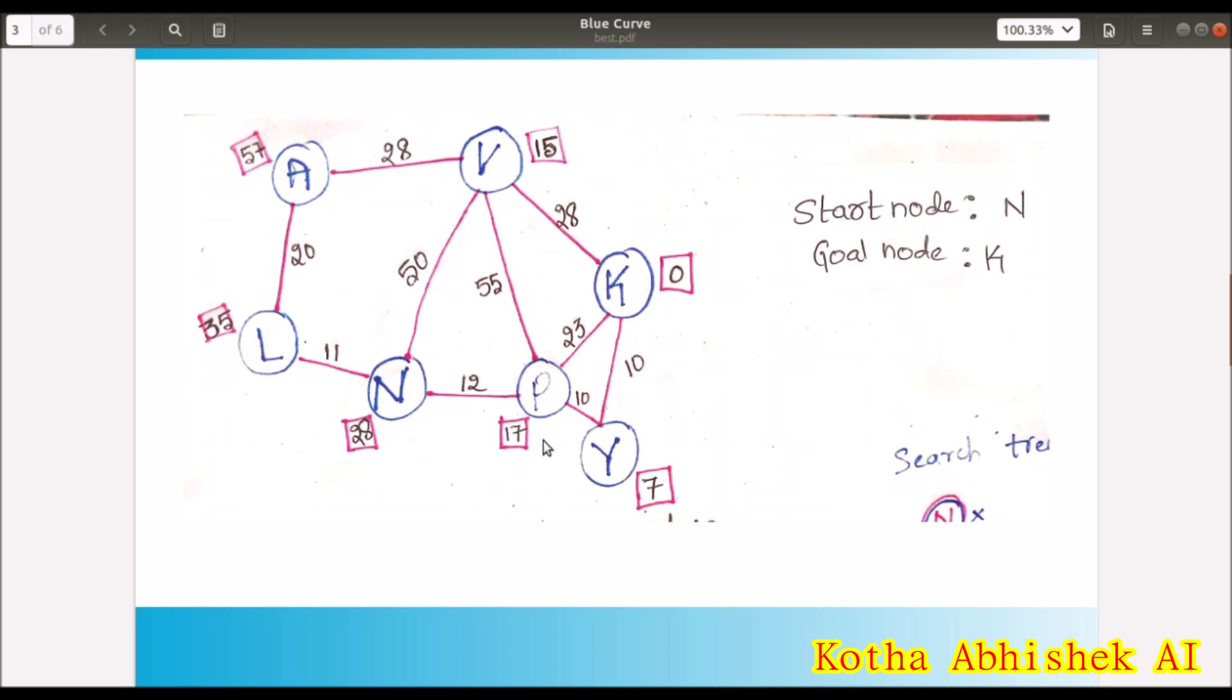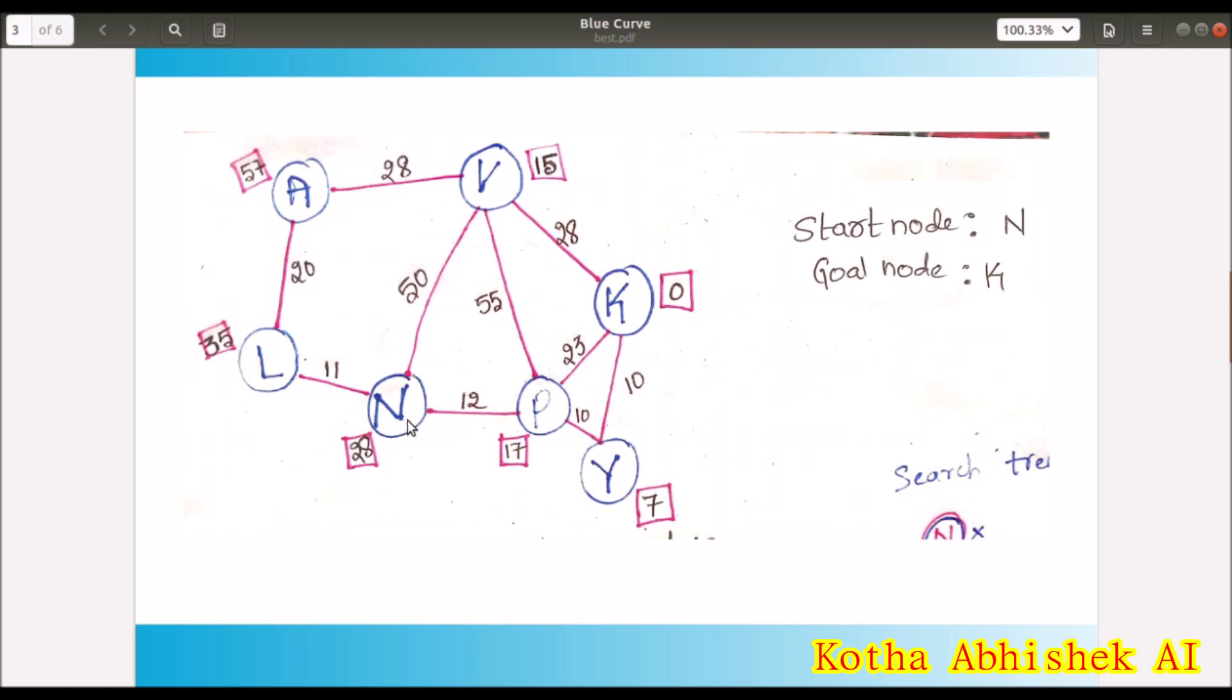So if you go through some shortcuts or like this, we can reach there with 17 kilometers. So what this heuristic means here? They are the shortcut estimated values. So let's know if the start node is N. Let's see which path it will give.